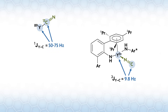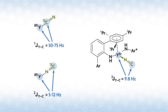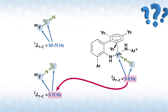Yttrium-carbon one-bond couplings are about 50 to 75 hertz, which is what you would expect for a regular carbon-bound cyanide. The two-bond couplings are typically 5 to 12 hertz. Our complex is near the middle of the two-bond coupling range, strongly suggesting it is an isocyanide.